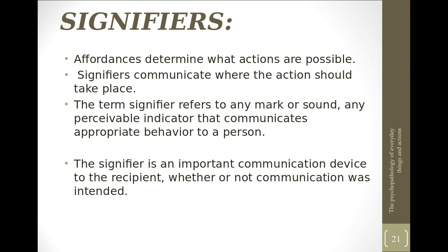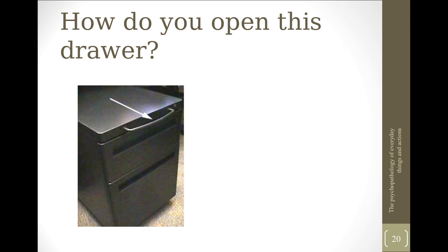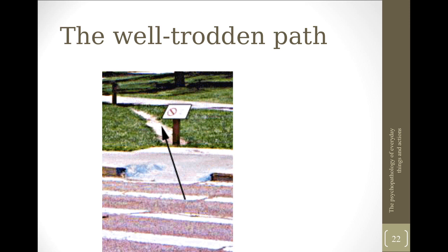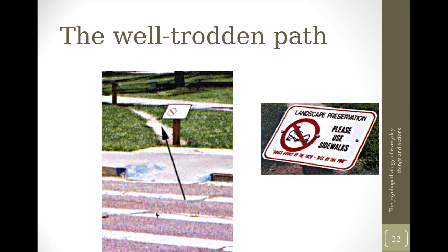Previously, we have seen that in the drawer example, it was not clear what the handle was doing — whether it was there to open the drawer or not. So a signifier has to be there. For example, there is a path or road where there are some objects to be preserved beside it — perhaps a garden or a landscape preservation site. There is a signifier, a board, saying "please use sidewalks," so people should not walk over those objects but on the sidewalks instead.